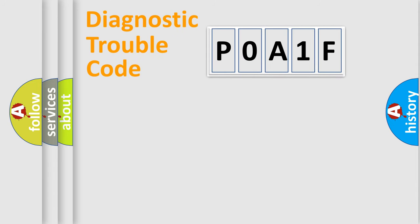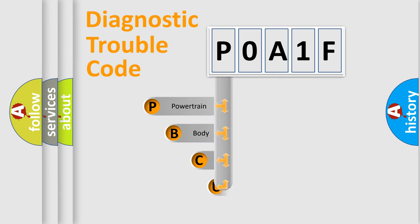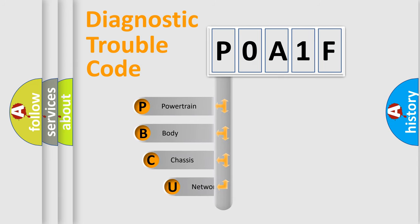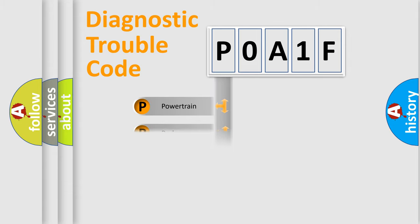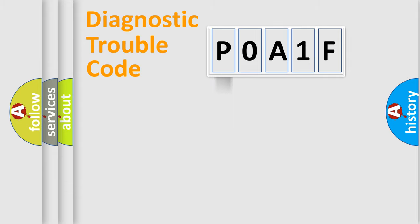Let's do this. First, let's look at the history of diagnostic fault code composition according to the OBD2 protocol, which is unified for all automakers since 2000. We divide the electric system of automobile into the four basic units: Powertrain, Body, Chassis, and Network.